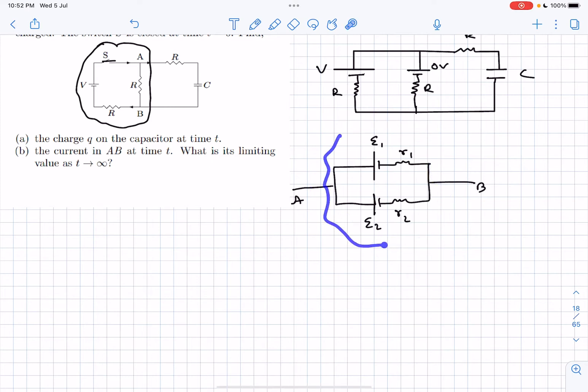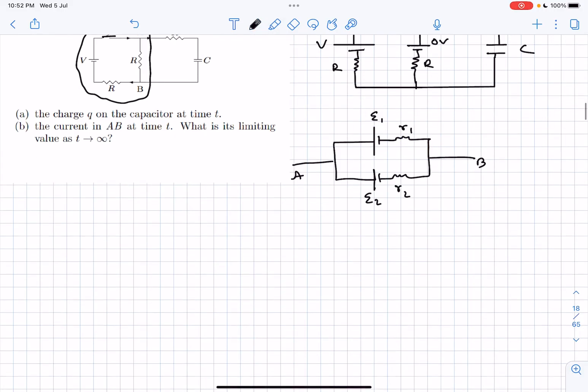When we have a parallel combination of cells whose EMFs are E1 and E2 and internal resistances are R1 and R2, we can replace this entire battery with a cell whose EMF is E equivalent and resistor is R equivalent.